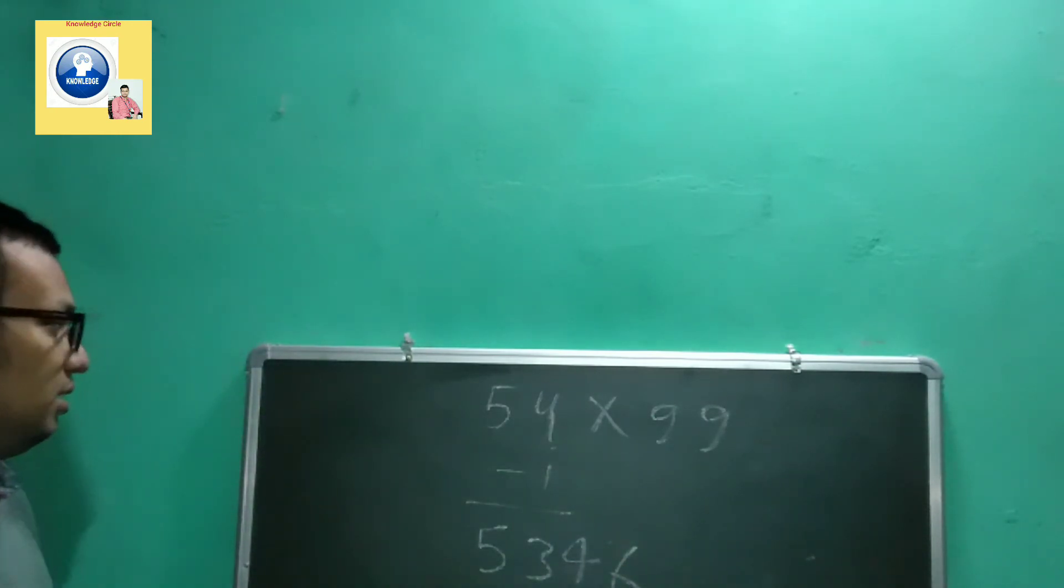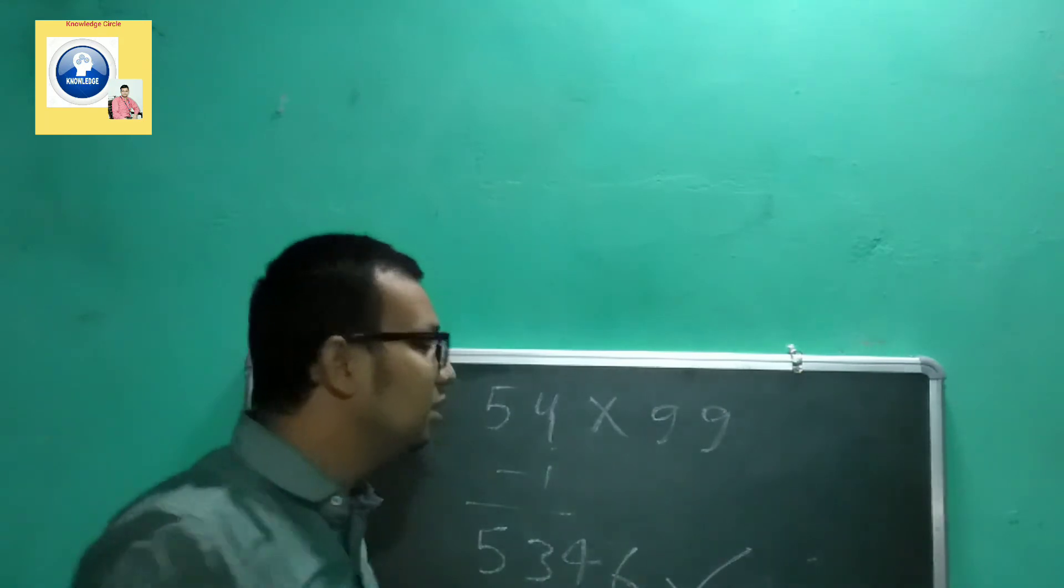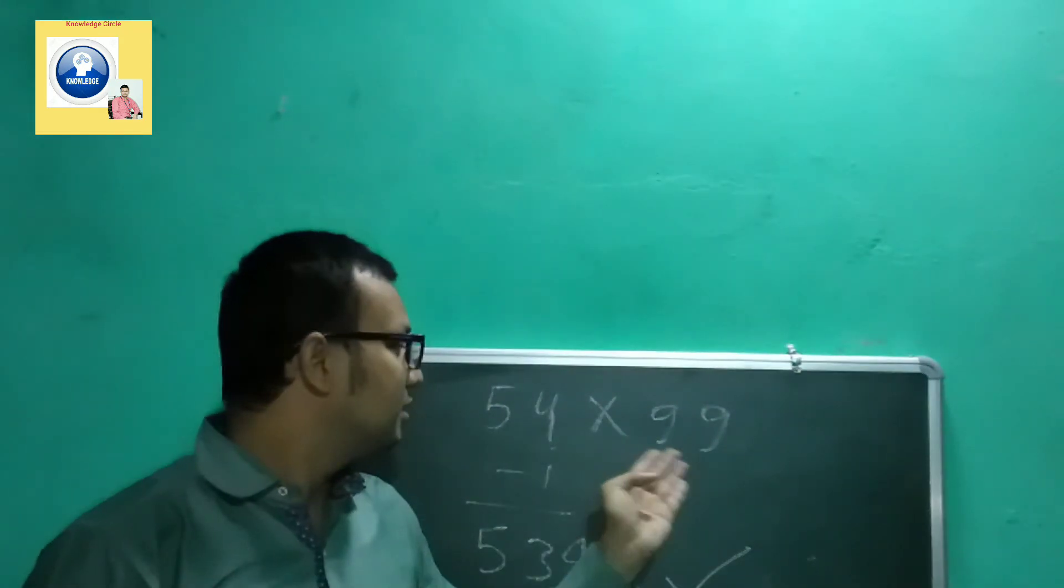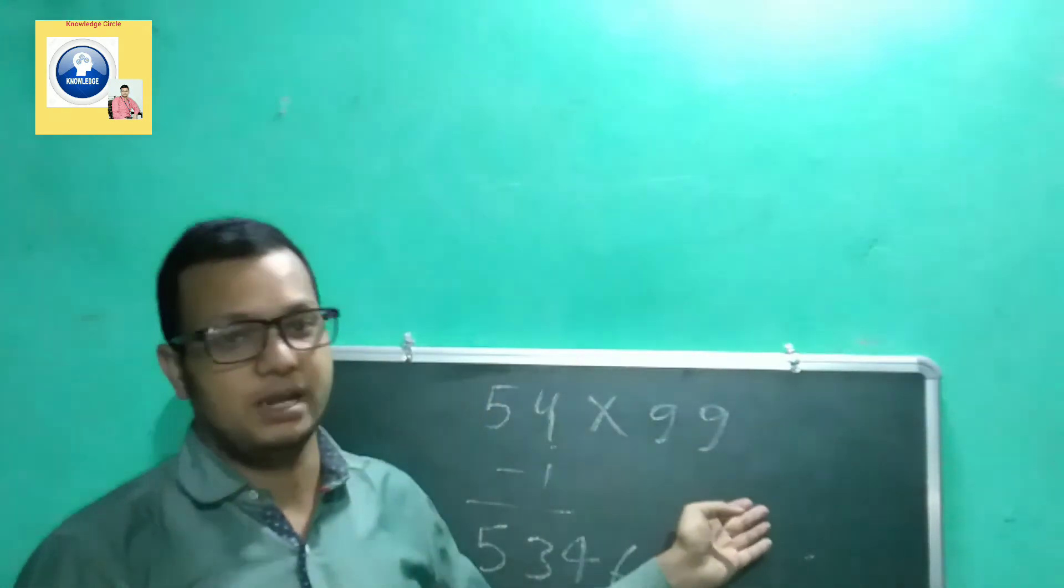So in this way we will get the answer. This trick is very useful when your multiplication number is 99, 999, or four times 9.